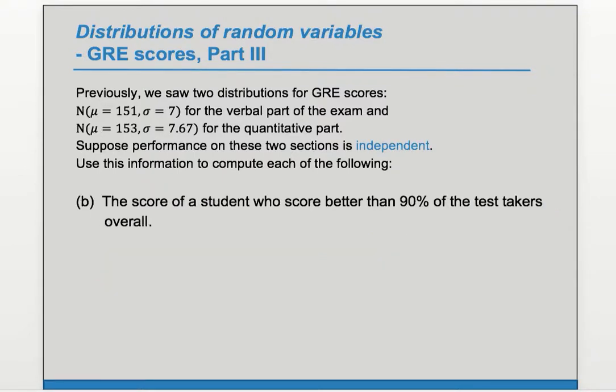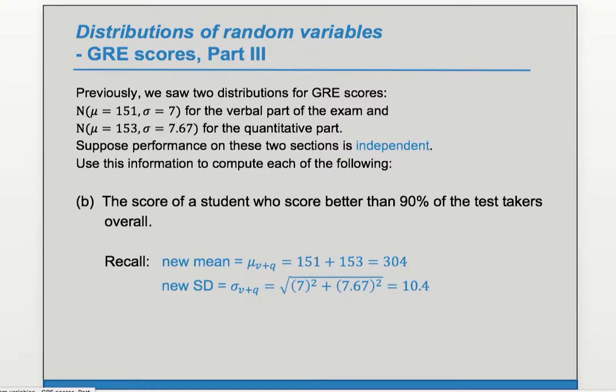Part B, the score of a student who scored better than 90% of the test takers overall. We found the new mean and the new SD previously, so we'll need to use those numbers. And now a sketch will help.